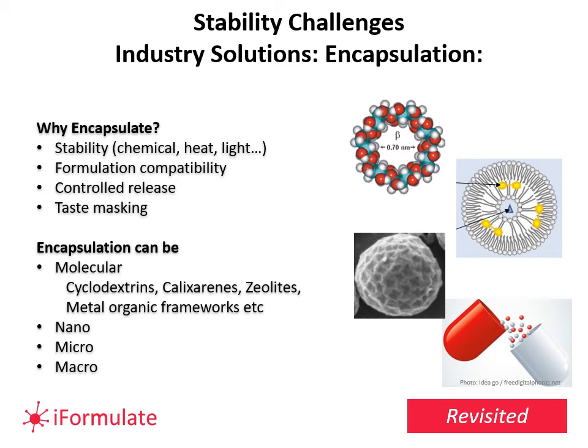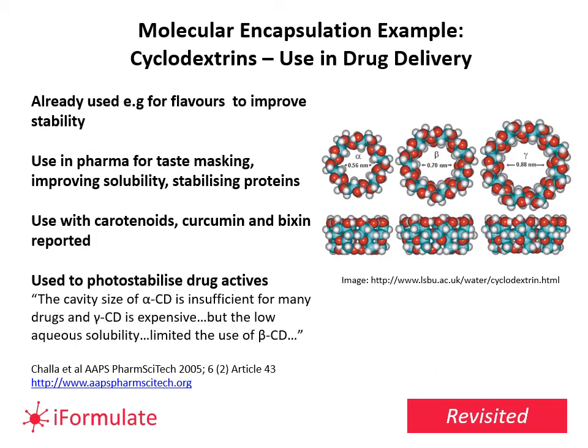Other approaches from other industries involve encapsulation. Encapsulation can be molecular — cyclodextrins, for example — or use metal organic frameworks, and can be done at micro and macro scale. These cyclodextrins are used in drug delivery and also for flavours, particularly the beta-cyclodextrins. They've also been used to photostabilize drug actives. The idea is that the active slots into the hole in the cyclodextrin and is trapped. They are being used in flavours and foods, so beta-cyclodextrin is already widely used.